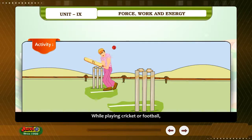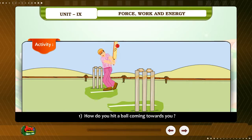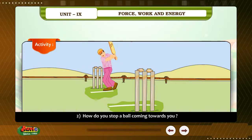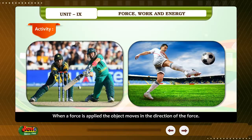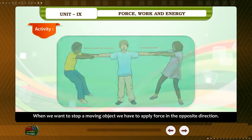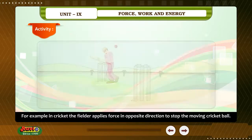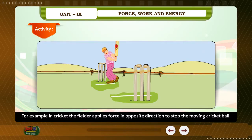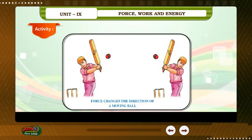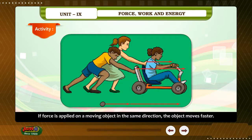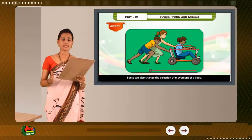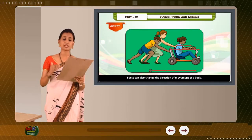Activity: While playing cricket or football, when a force is applied, the object moves in the direction of the force. When we want to stop a moving object, we have to apply force in the opposite direction. For example, in cricket, the fielder applies force in the opposite direction to stop the moving cricket ball. If force is applied on a moving object in the same direction, the object moves faster.